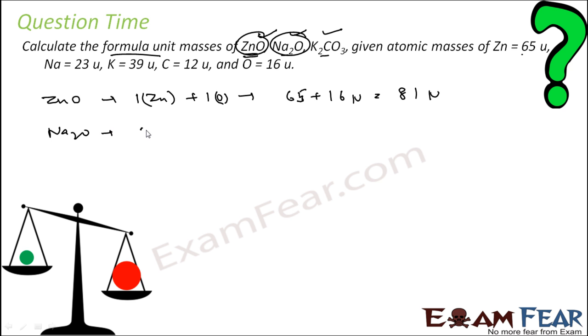Second, Na2O. Two sodium, one oxygen. Sodium is 23. So, two into 23 because they are two sodium units. Plus one into oxygen. Oxygen is 16 unit. So, you solve this. 46 plus 16 is 62 units.